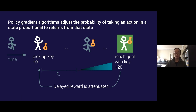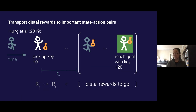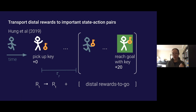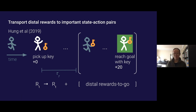That brings me to the TRT algorithm, based on work by Hung from DeepMind on optimizing agent behavior over long time scales by transporting value. The idea is that if you've identified the significant state-action pairs that should receive credit for some long-term reward, you can splice those distant rewards to these state-action pairs to amplify the signal and reinforce those actions. In the original situation, the agent receives zero immediate points for picking up the key, but if we splice in the distal rewards — say 20 points — we have much more signal to increase the probability of taking that action.